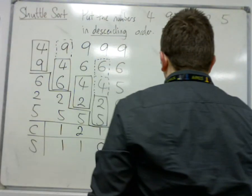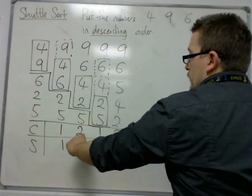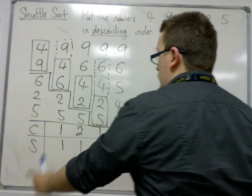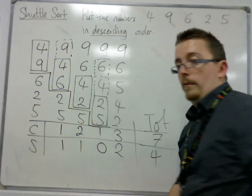So then you can total them up if you need to: one, two, three, four, five, six, seven comparisons, and one, two, three, four swaps.